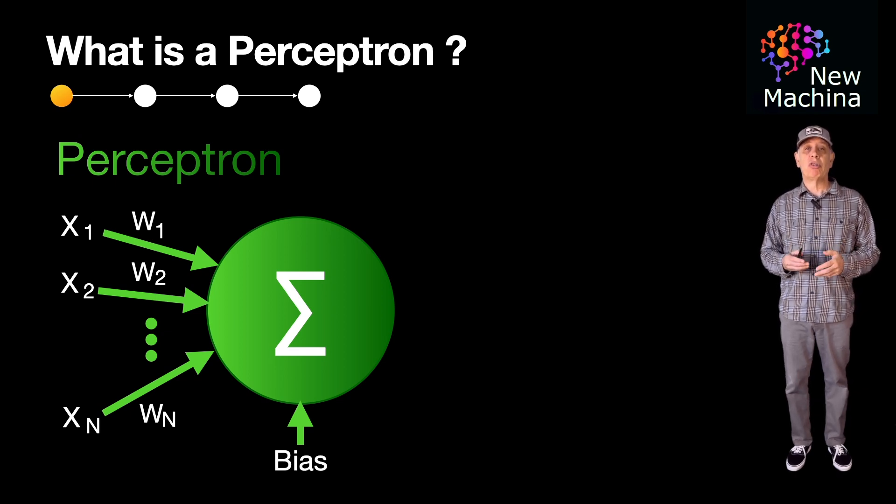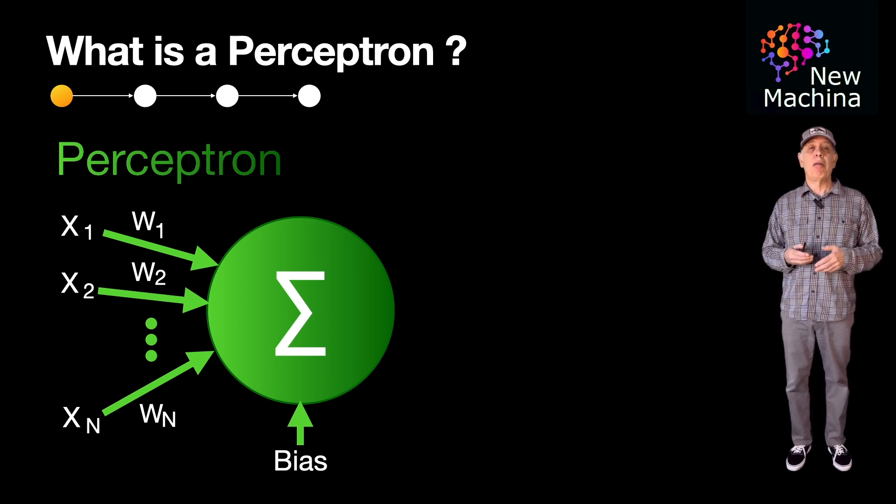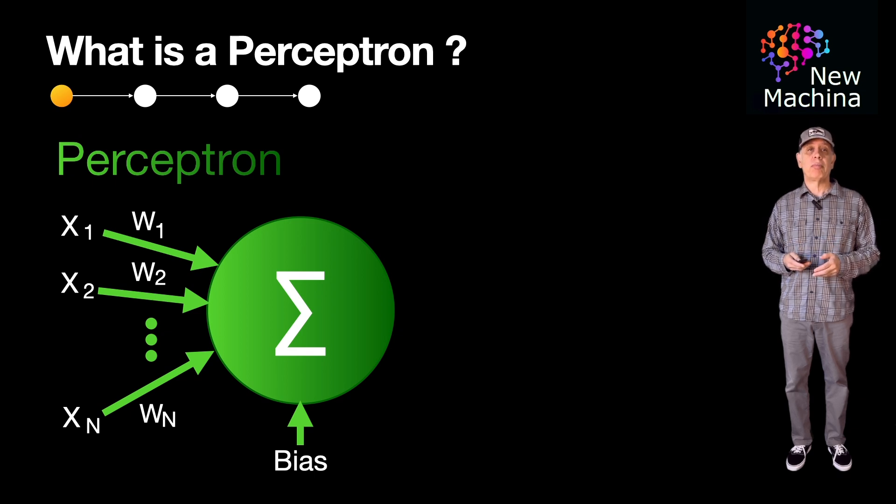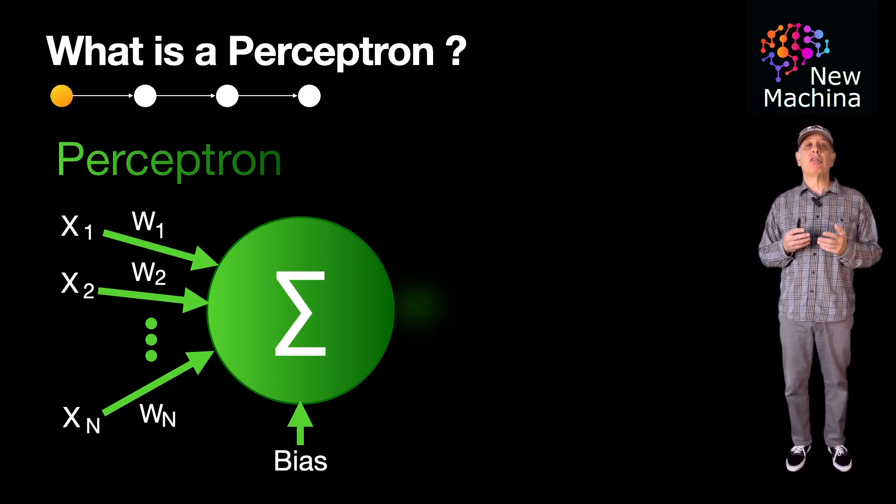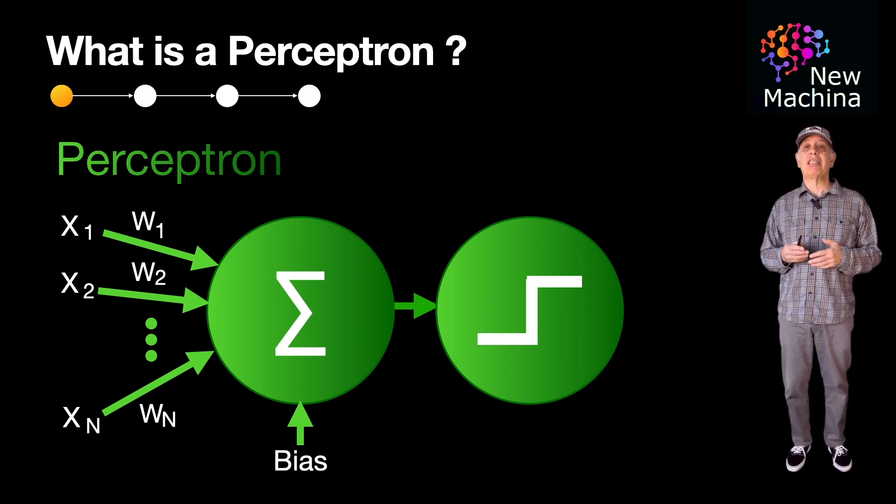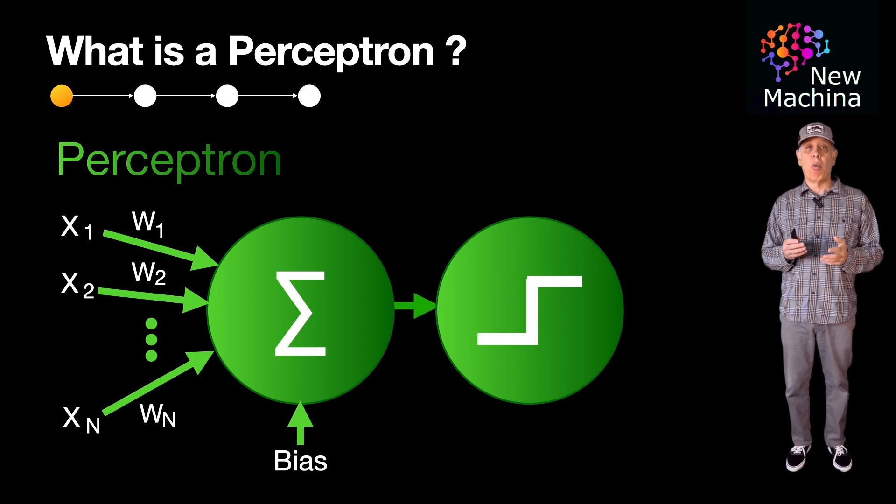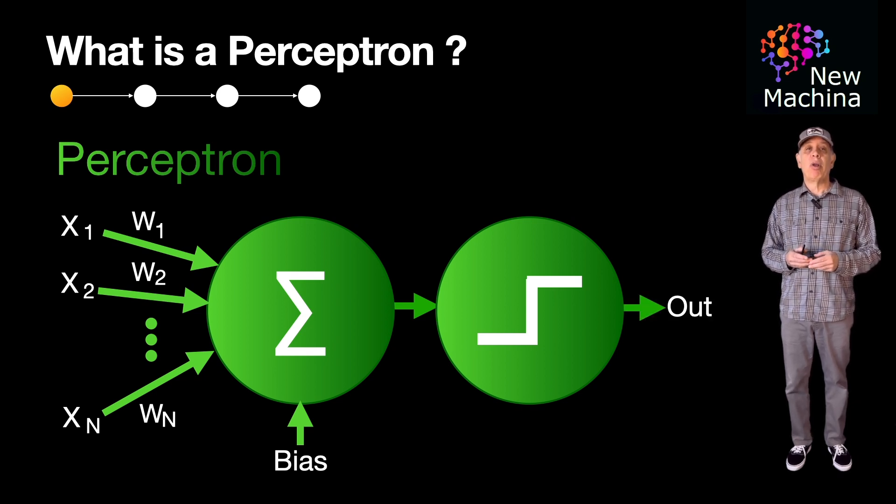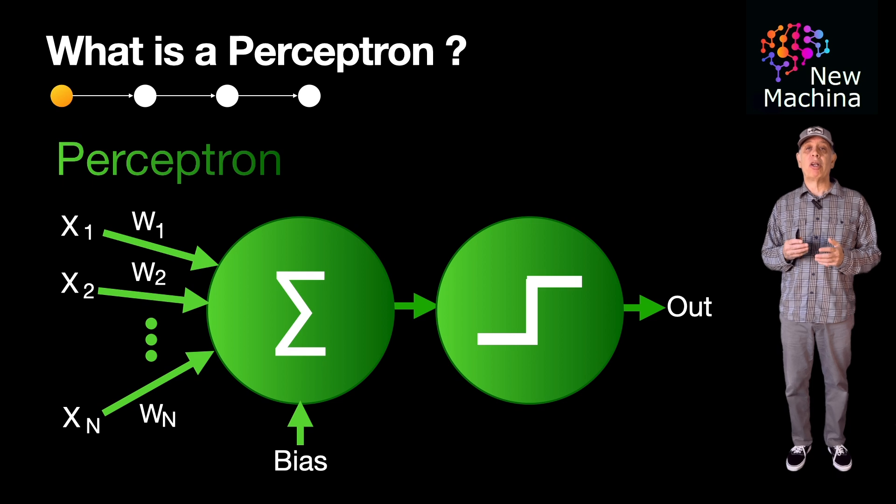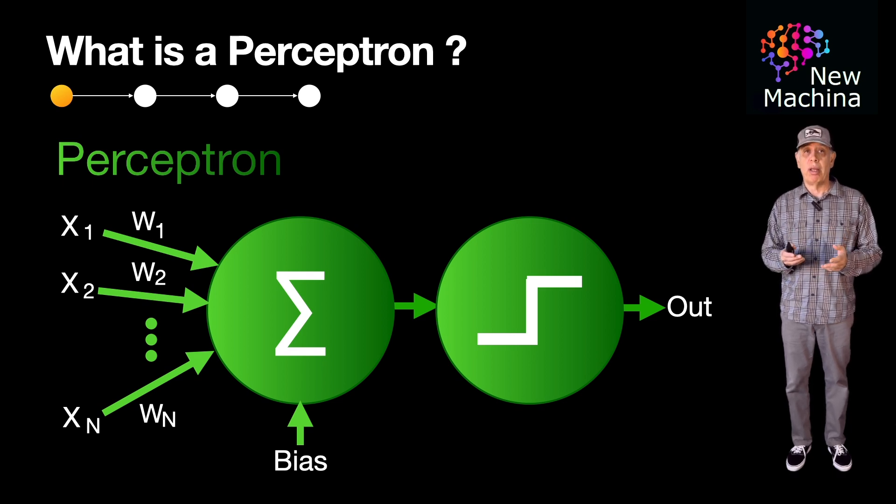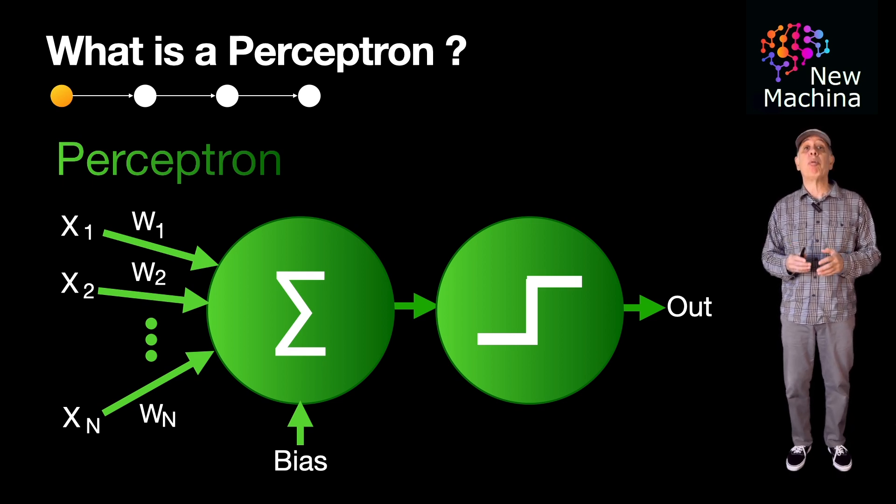The perceptron computes the weighted sum of inputs, applies the bias, and then passes this sum through an activation function. In the basic perceptron, the activation function is typically a step function which outputs a binary result of either zero or one. In summary, if the sum is greater than a certain threshold, the output is one. Otherwise, the output is zero.